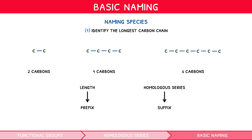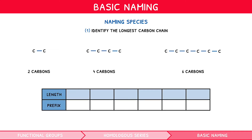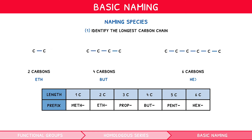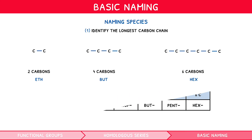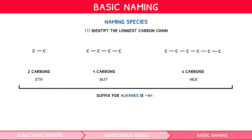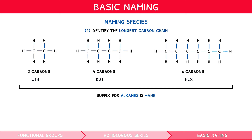For your exam, you need to memorize prefixes for 1 to 6 carbon chains. A 1-carbon chain has the prefix meth-, a 2-carbon chain has the prefix eth-, a 3-carbon chain has the prefix prop-, a 4-carbon chain has the prefix but-, a 5-carbon chain has the prefix pent-, and a 6-carbon chain has the prefix hex-. Therefore, our examples relate to eth-, but-, and hex-. Since the suffix for alkanes is "-ane", if the three chains used earlier were surrounded with hydrogens to create alkanes, they would be named ethane, butane, and hexane respectively.